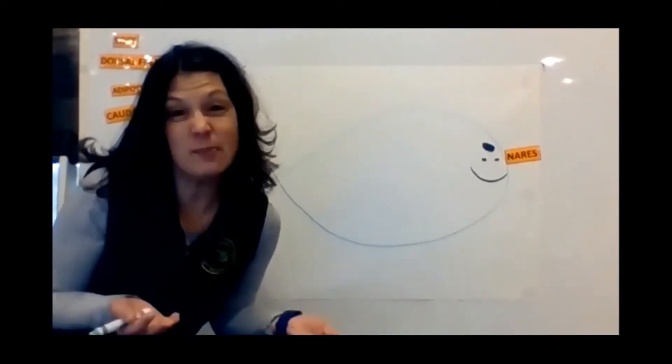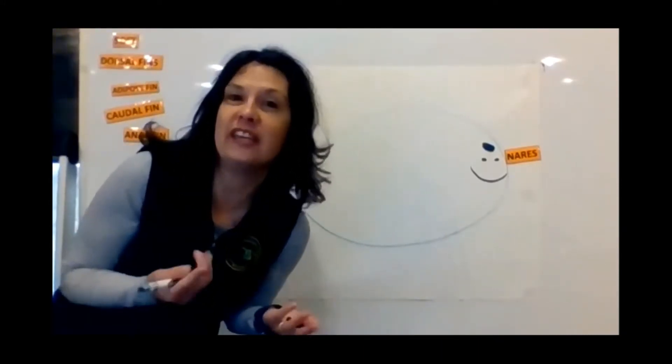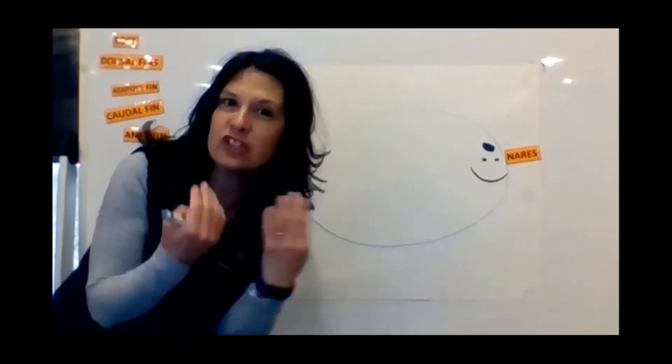I like a happy fish. I'm going to give it a smile. Now fish have different size mouths. Some have big teeth, little teeth. It depends on where they live and what they eat, how their mouth is shaped, and what their teeth are.